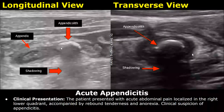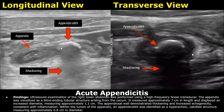Here is a case of appendicitis with appendicolith. The clinical presentation is almost similar to the previous one; this patient also had anorexia. You can start the findings by writing which type of transducer was used, then write about the visualization of the appendix followed by the size.